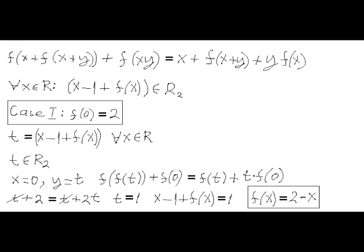Let's consider the first case when f of 0 equals 2. And let's denote by letter t, x minus 1 plus f of x for any real number x. Remember that value of t is a fixed point of function f. We don't know the value of t, nor do we know how many different values of t exist. But there is at least one value of t, since function f is defined for any real argument x.